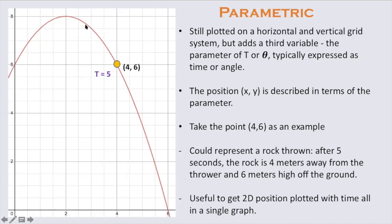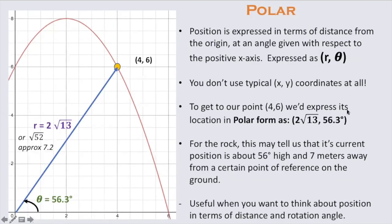It's 4 meters horizontally displaced and 6 meters high off the ground. This is the actual trajectory of the rock, and it's very useful to see this two-dimensional information, this position information, with time on a single graph.